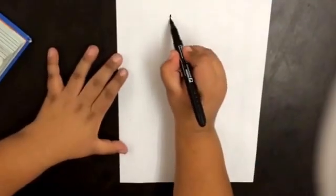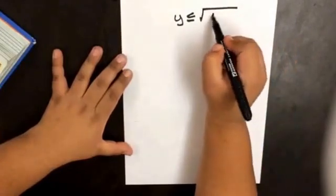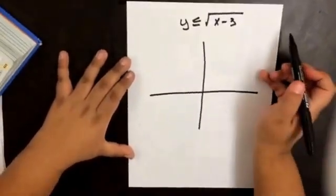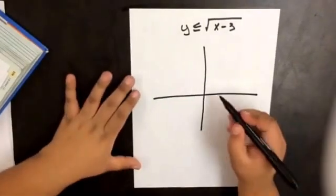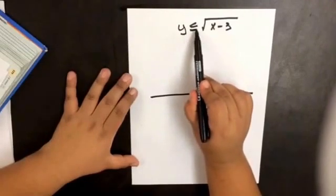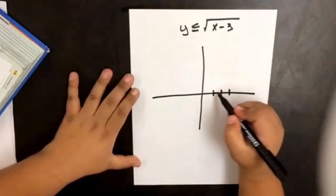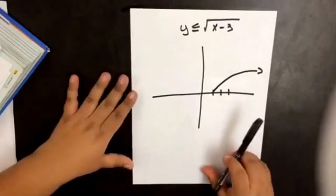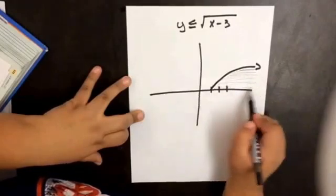Let's do another example. What if we have y is less than or equal to the square root of x minus 3? That means we're graphing the square root of x and moving it 3 units to the right. Since we have the less than or equal sign, it's going to be a solid line. Since our inequality says less than, we're going to shade everything below the curve.